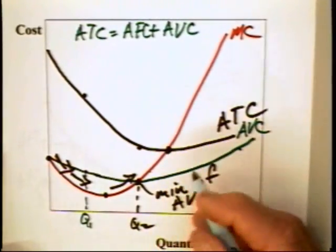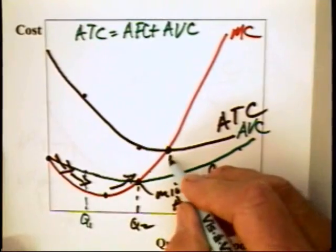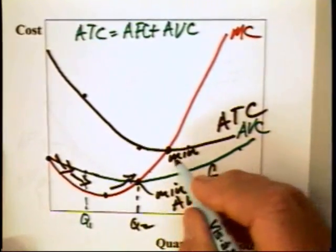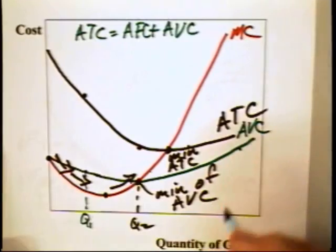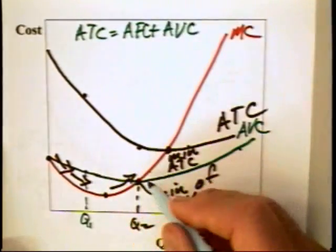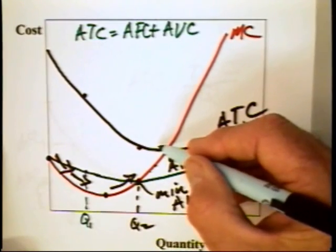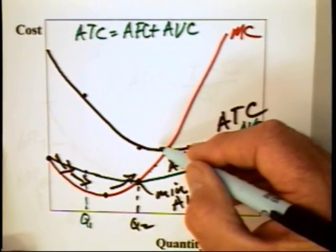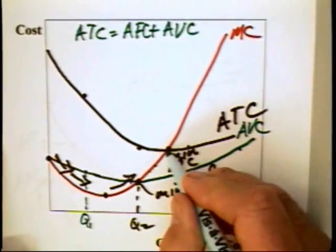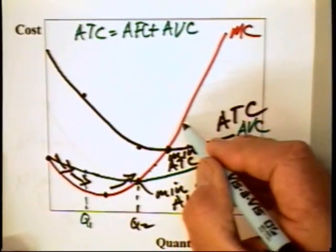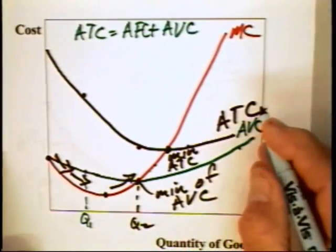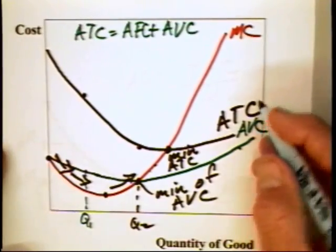By a similar line of logic, we know that this is the minimum of the ATC curve. So long as the marginal cost is below the average total cost, average total must in fact be falling. And when marginal cost gets above the average total cost, the average total cost must be rising.